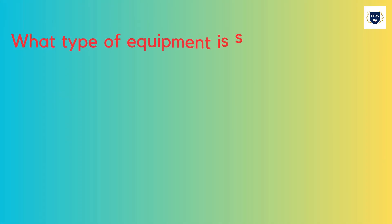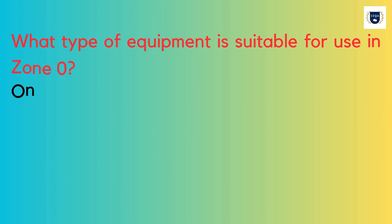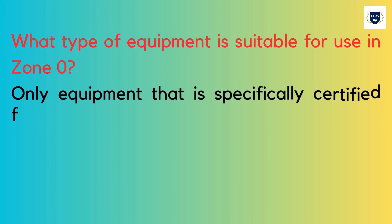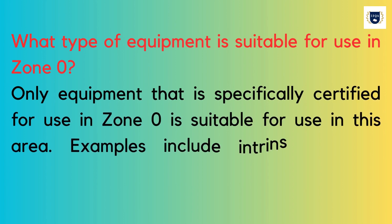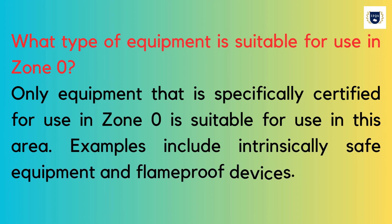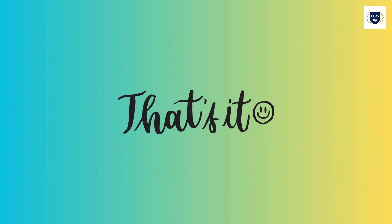What kind of equipment is suitable for use in Zone 0? Only equipment that is specifically certified for use in Zone 0 is suitable for use in this area. Examples include intrinsically safe equipment and flame-proof devices.